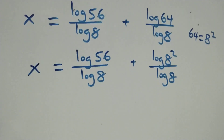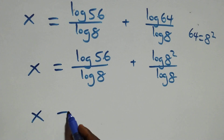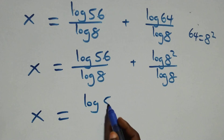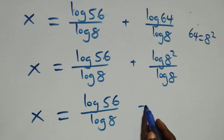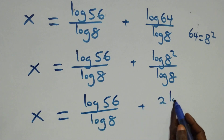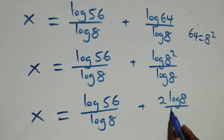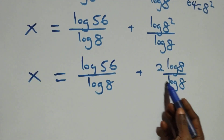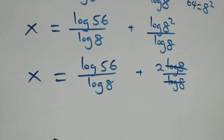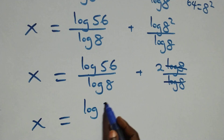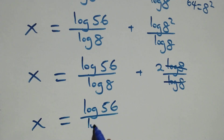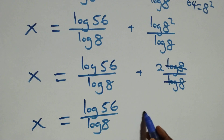At this point, we apply the power log rule: the 2 comes down. All we have becomes x equals log 56 over log 8 plus 2 times log 8 over log 8. Log 8 cancels each other, we have 2 left. So x equals log 56 over log 8 plus 2.